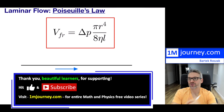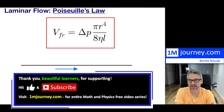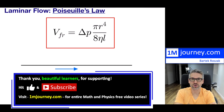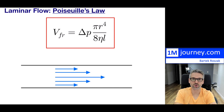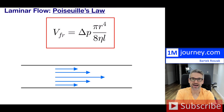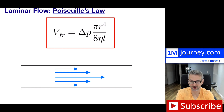Welcome in. So, laminar flow and Poiseuille's law. Here is the equation that Poiseuille has come up with, and this is for the actual volume flow rate within a fluid — a viscous fluid.